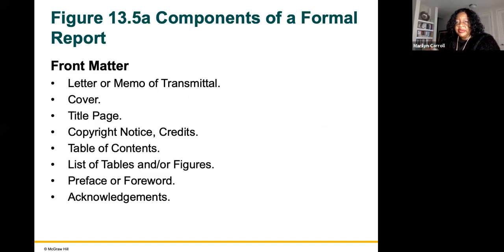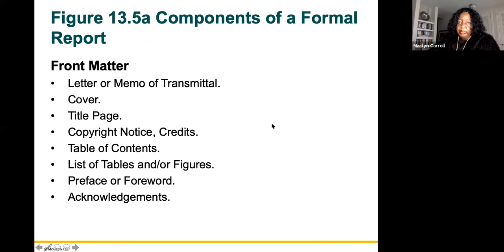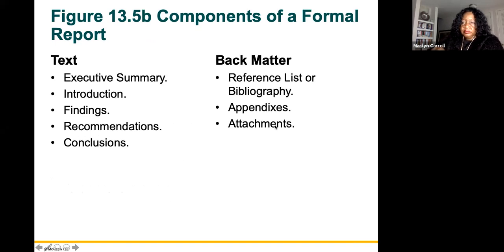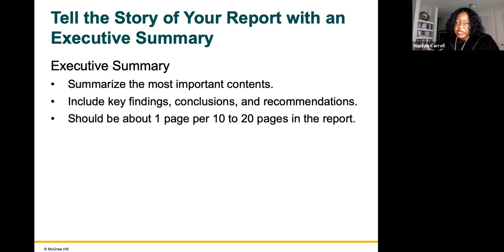Components of a formal financial report include front matter: letter or memo of transmittal, cover, title page, copyright notice, credits, table of contents, list of tables and figures, and preface or foreword acknowledgement. Tell the story of your report with an executive summary — you're summarizing the most important contents of your report, including key findings, conclusions, and recommendations. It should be approximately one page per every 10 to 20 pages in the report.